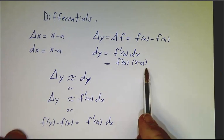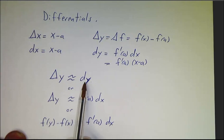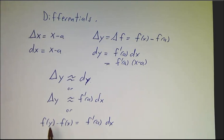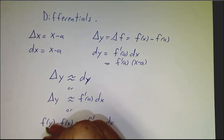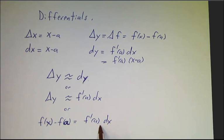And that's the quantity we're looking at. So when we say that delta y is approximately dy, that's the same thing as saying delta y is approximately f'(a) dx. Or f(x) minus f(a) being approximately f'(a) dx.